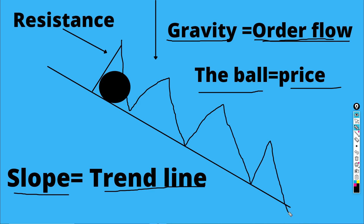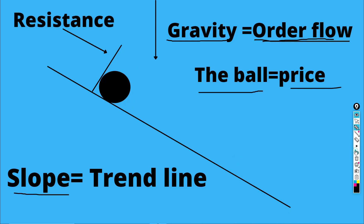Just like the ball rolls down, price will do a small hop and then come down — that's what happens in the market. Even a four-year-old kid can tell which way the ball will go. If someone pushes the ball up, there is a resistance — an obstacle. The ball will bounce from this obstacle, and if it is strong enough, it starts to move up.